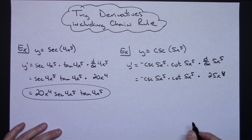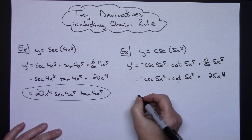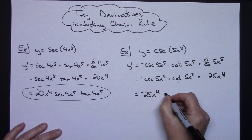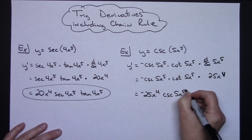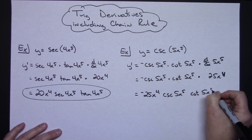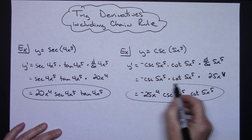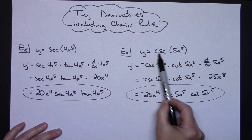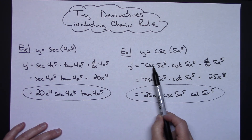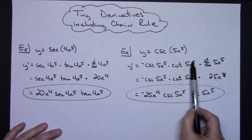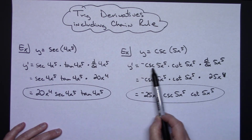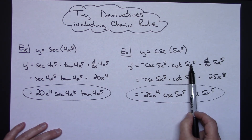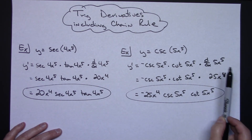Taking the derivative there gives negative cosecant(5x⁵) times cotangent(5x⁵) times 25x to the fourth. Cleaning it up, pulling the negative sign out in front: negative 25x to the fourth cosecant(5x⁵) cotangent(5x⁵) is the final derivative. The key to all of these is when you've got chain rule involved: take the derivative of the outside function leaving the inside alone, then multiply by the derivative of the inside.